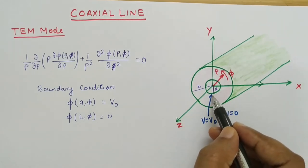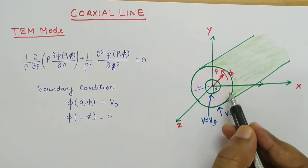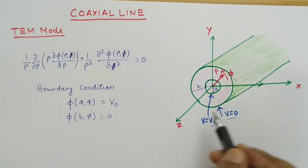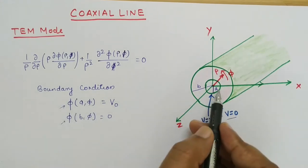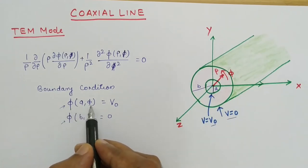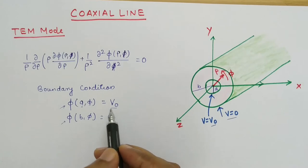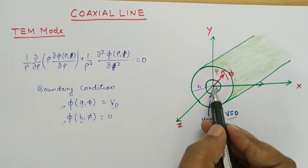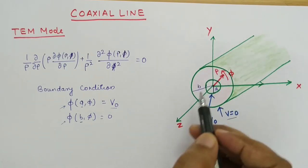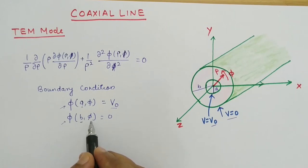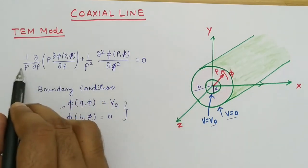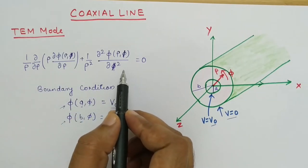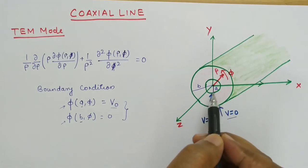Let us assume that the potential at the inner conductor is V0 and the potential at the outer conductor is 0. The boundary condition can be written as: phi(A, phi) — where this phi is potential and this phi is the angle. So phi(A, phi): if rho equals A, that is the inner conductor, then the potential is V0. And if rho equals B, that means the potential at the outer conductor, phi(B, phi) equals 0. This boundary condition will be applied when we solve the Laplace equation, which must be satisfied for a two-conductor system.